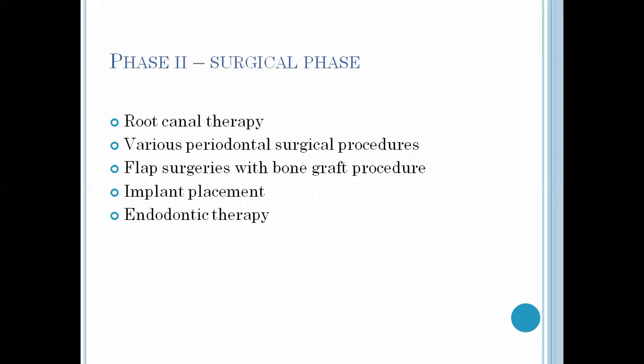Phase two is the surgical phase. It consists of root canal therapy, various periodontal surgical procedures such as elimination of the pocket wall and pocket depth, flap surgeries with bone graft procedures, implant placement, and endodontic therapy.